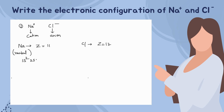After 1s, we go to 2s, which also has a capacity of two, then into 2p which has a capacity of six electrons. So in the first shell there are two electrons, and filling 2s and 2p gives us ten electrons total. We are still left with one more electron since the atomic number of sodium is 11.